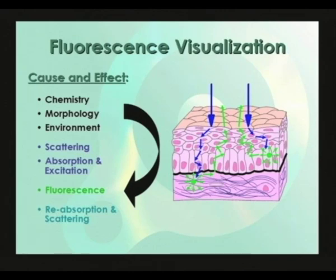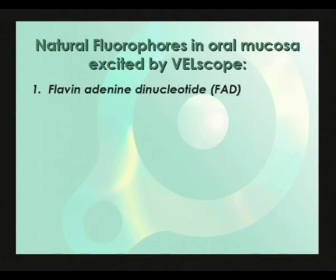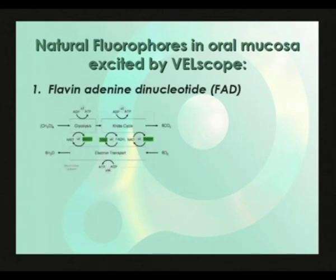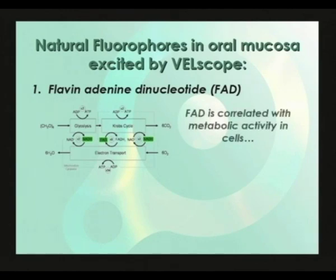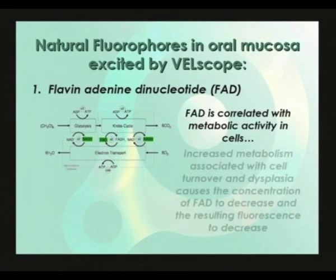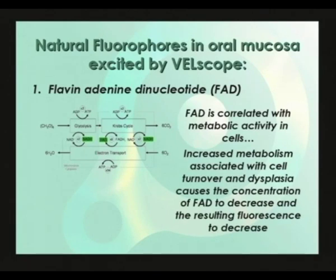There are four main fluorophores that are excited by blue light in oral mucosa. Flavin adenine dinucleotide, or FAD, is thought to be the major contributor of epithelial fluorescence under blue light excitation. It is a coenzyme involved in the Krebs cycle and is correlated with metabolic activity in cells. When a cell is actively metabolizing, there is a lower concentration of FAD. Therefore, cancer cells, which are generally more active than normal cells, exhibit less FAD fluorescence than normal.